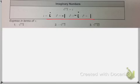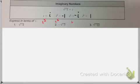So it always goes: i, negative 1, negative i, positive 1. What I mean by it repeating is that when you go to i to the fifth power, it comes back to i. So this is also i to the fifth, i to the sixth, i to the seventh, i to the eighth, and then it repeats again: i to the ninth, so on and so forth. So if you can remember those first four, you'll know all of the powers of i.